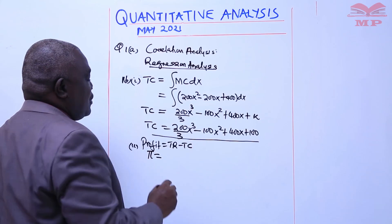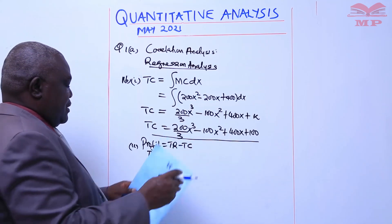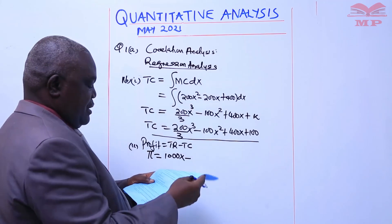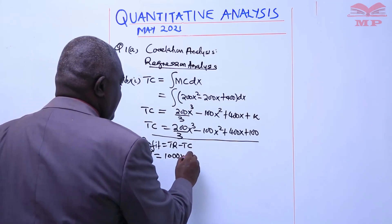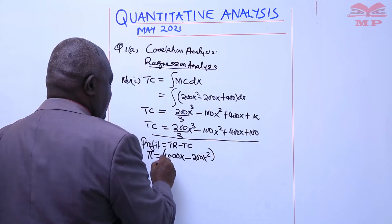by π. Total revenue is given as 1000X - 200X². Please use brackets.